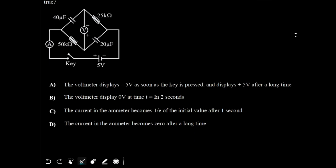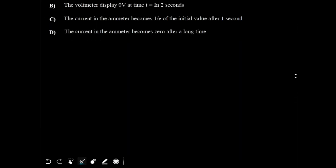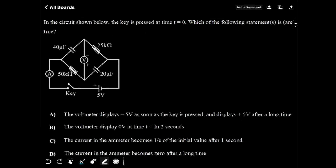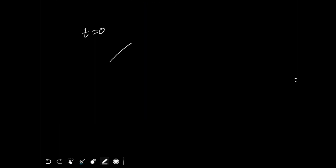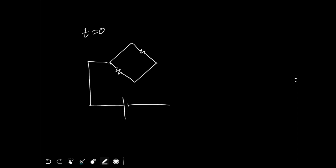First, let's look at t equal to 0. At t equal to 0, the capacitors have no charge, so they behave like a short circuit — there is no voltage across them. I can draw the circuit for t equal to 0 with the capacitors replaced by short-circuited wires. This is my circuit at t equal to 0.